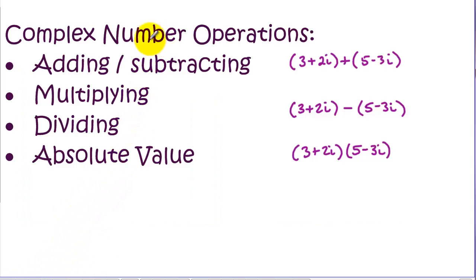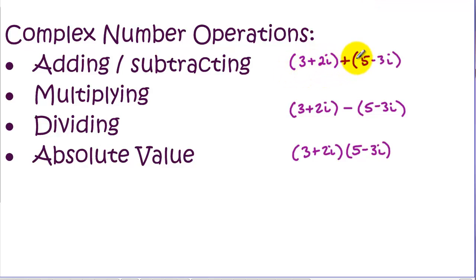To wrap up: if we have a number system, we need a set of math operations. So we have to be able to add, subtract, multiply, and divide complex numbers, and find their absolute value. I've put an example of each here. They're fairly simple — the skills we use in simplifying polynomial expressions can be used here.